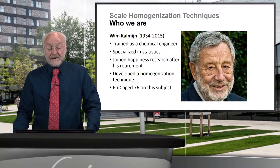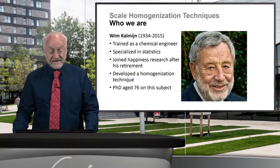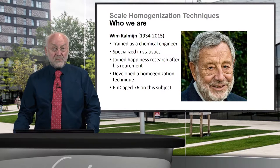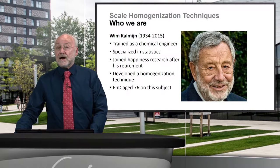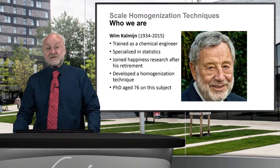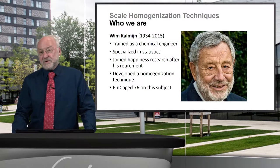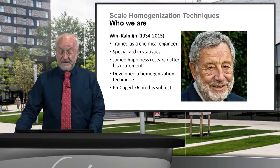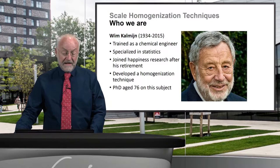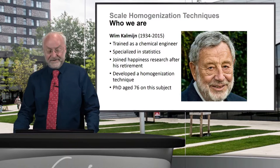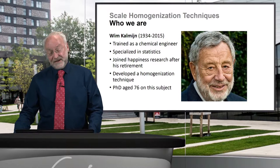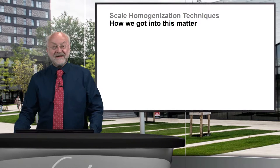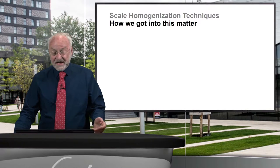Wilhelm Kalmijn is not a social scientist — he was trained as a chemical engineer, and most of his life he worked in the chemical industry, specializing in statistics. After his retirement he joined our group at university, developed one of the techniques we will show today, and at age 76 he did a PhD on this subject. These three people were all involved in scale homogenization.